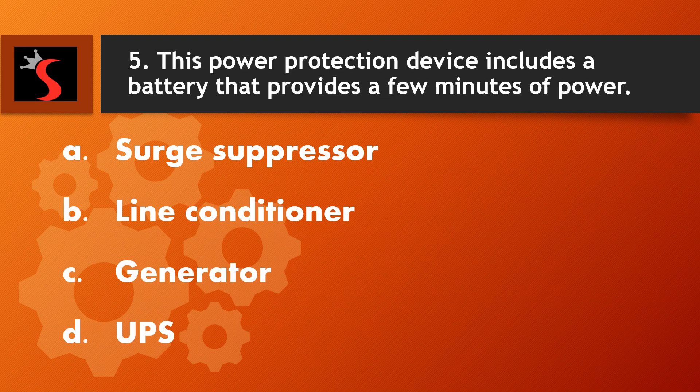The fifth question is: this power protection device includes a battery that provides a few minutes of power. A. Surge suppressor, B. Line conditioner, C. Generator, D. UPS.